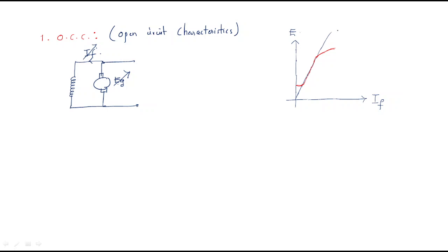The air gap line represents ideal behavior with low losses — shown as the blue line. Practically, the curve is different — shown as the red curve. At zero field current, some EMF is already available due to residual effect. As field current increases, EMF increases, but after a particular point, further increasing field current produces no change in EMF — this is saturation.